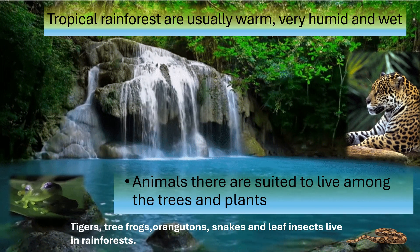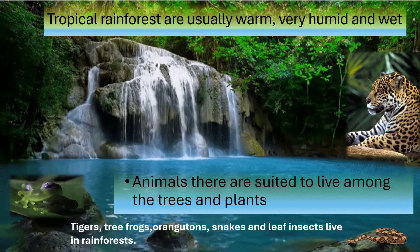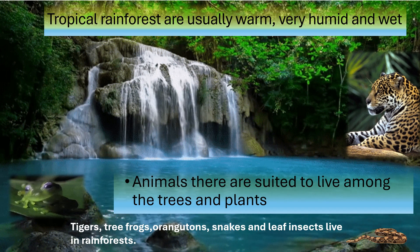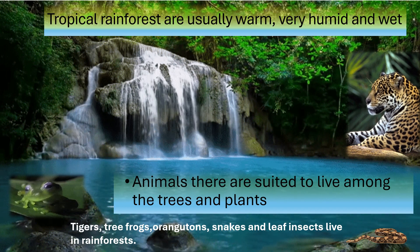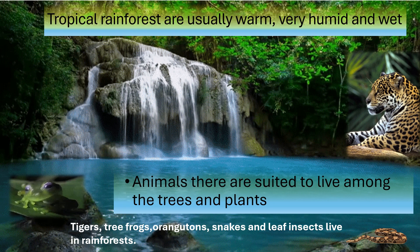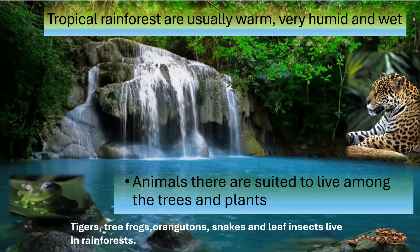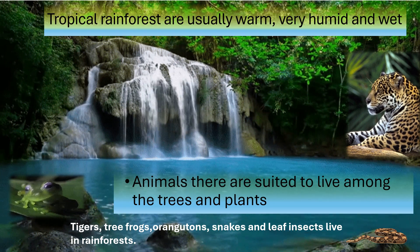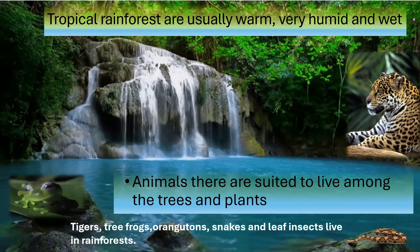Tropical rainforests are usually warm, very humid, and wet. Animals there are suited to live among the trees and plants. For example, tigers, tree frogs, snakes, and leaf insects live in rainforests.